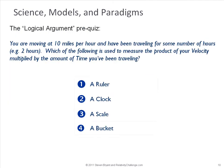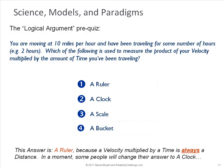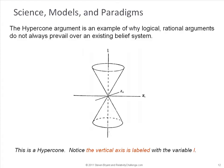So as we look at the hypercone, we have to begin with a quiz. You're moving at 10 miles per hour, have been traveling for some number of hours, let's say two. Which of the following is used to measure the product of your velocity multiplied by the amount of time you've been traveling? And your choices are a ruler, a clock, a scale, and a bucket. Most people will answer this, a ruler, because velocity multiplied by time is always a distance. Now, in a moment, some people will want to change their answer to a clock. So in order to understand why that might be the case, we have to look at the power of beliefs.